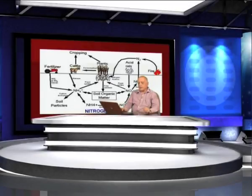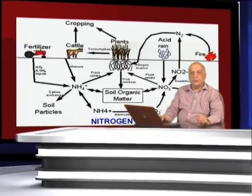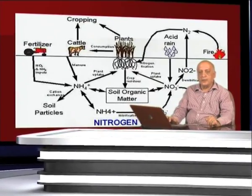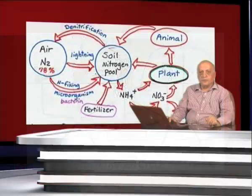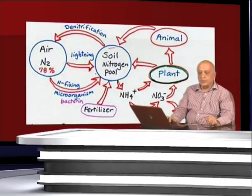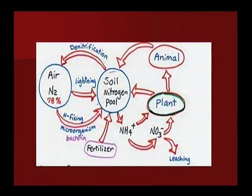Here we can see the nitrogen cycle — how the cropping pattern, cattle, and the atmosphere through lightning contribute to the soil pool of nitrogen. Plants can absorb nitrogen either in nitrate form or in the ammonium form. This is another scheme explaining the nitrogen cycle. There is a soil nitrogen pool and atmospheric nitrogen, present at 78 to 80 percent in the air, but this entire nitrogen is not available to the plant.